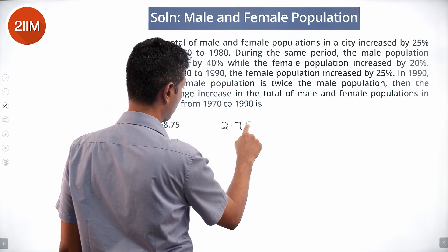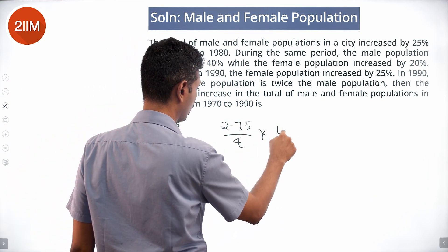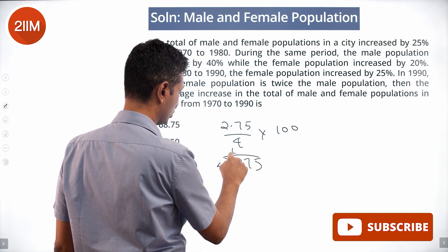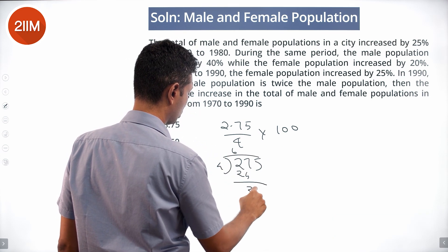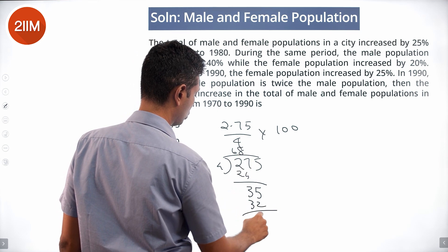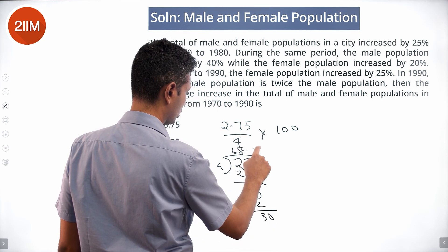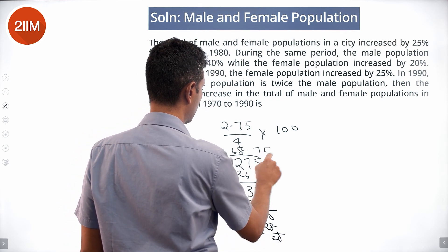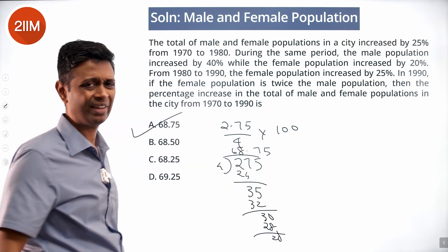Percentage increase is 2.75 by 4 into 100. 2.75 divided by 4... goes 6 times, 24, 35, 8 times 32, 30... 68.75%, which is there. Very simple question.